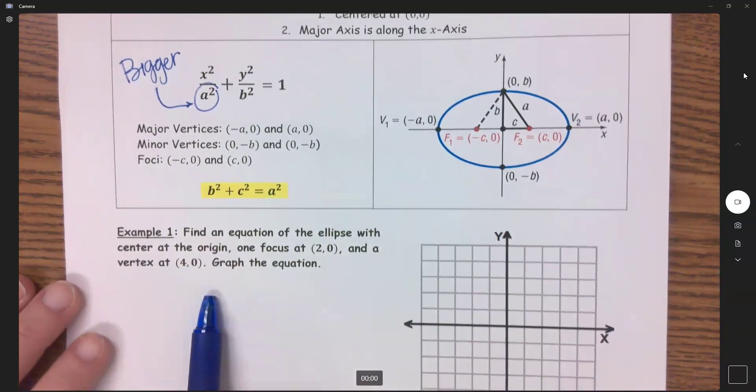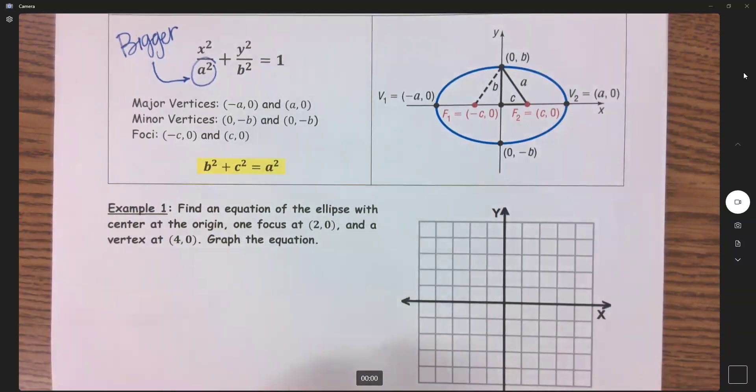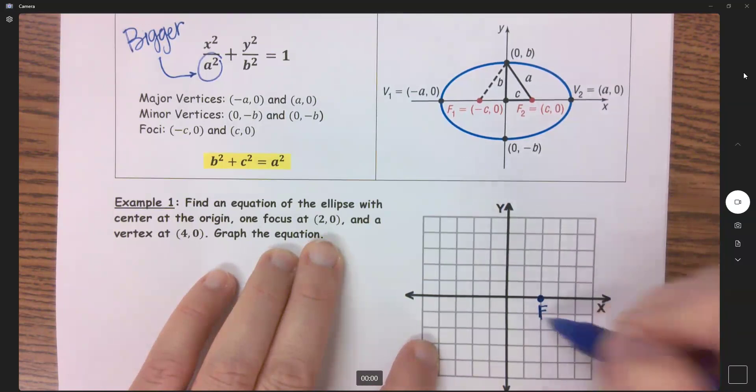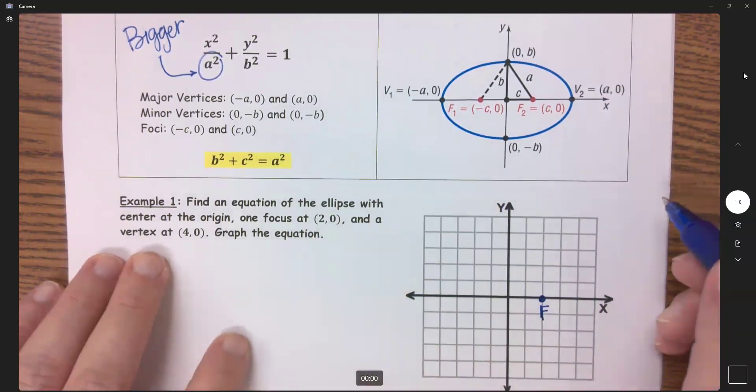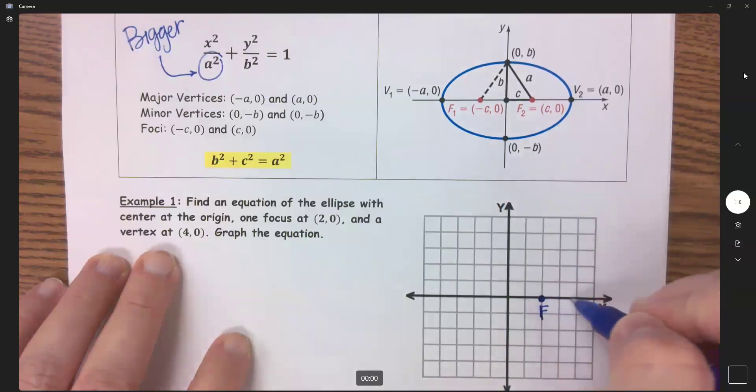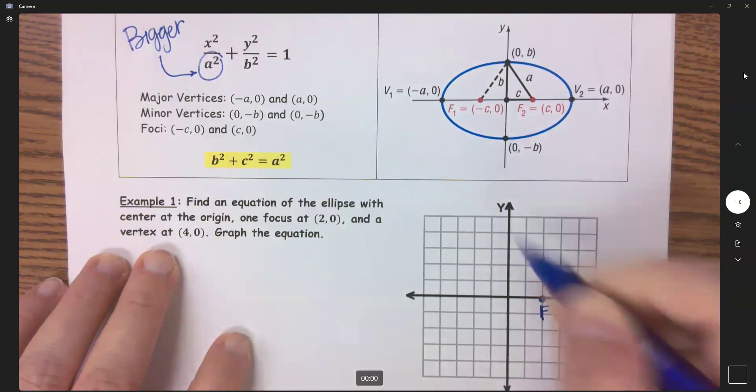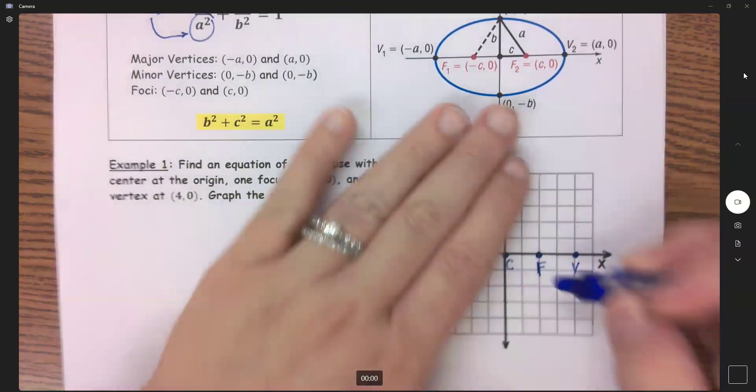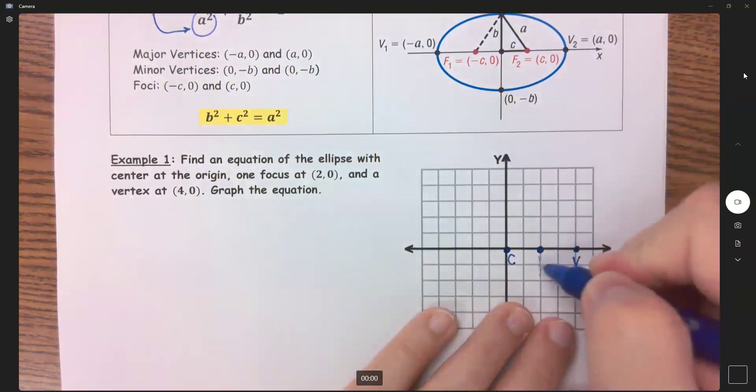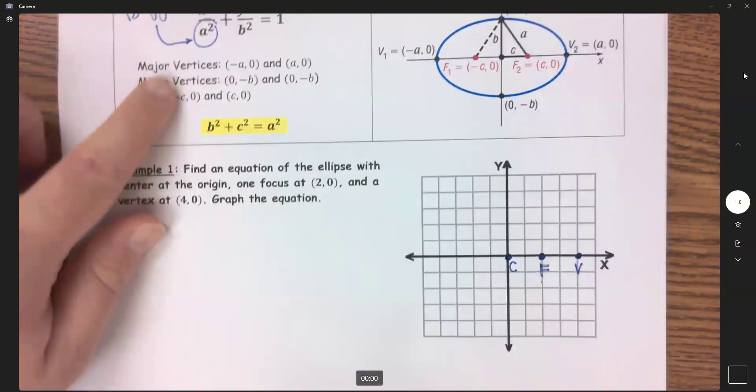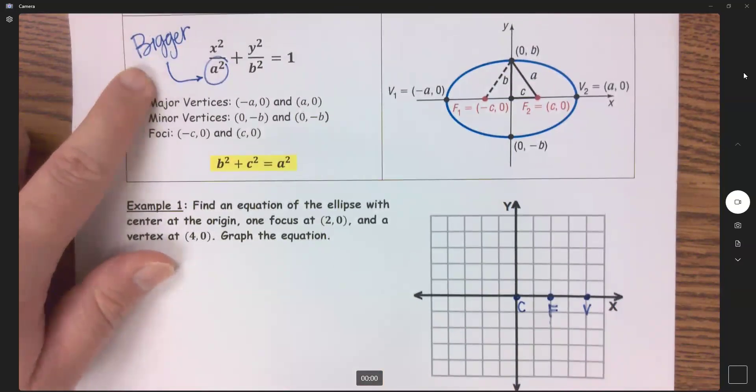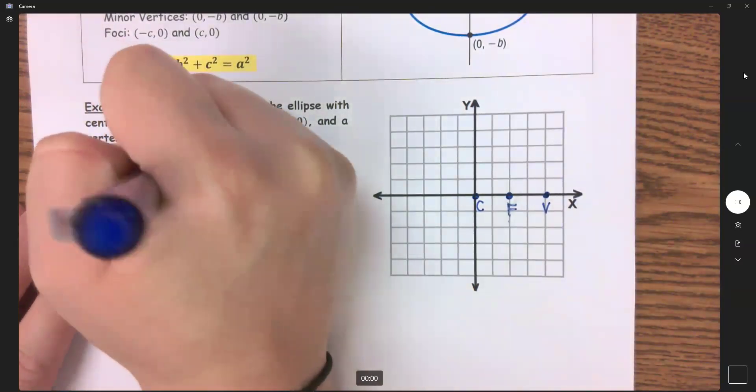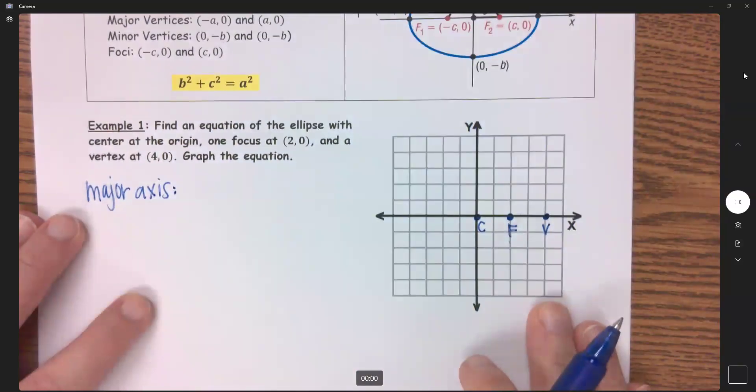Example one: find the equation of an ellipse centered at the origin. One focus, I'm going to plot these as I read them. One focus is at 2,0. I'm going to go ahead and label that as my F. And a vertex at 4,0. And they told me that my center was at the origin. So I am given these three points and now I need to build my equation off of this. Well, it doesn't tell me where my major axis is, but we always want to start there by identifying that.